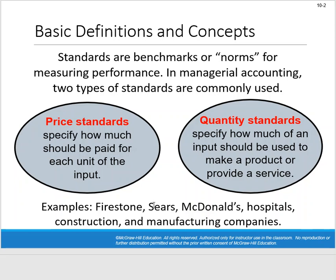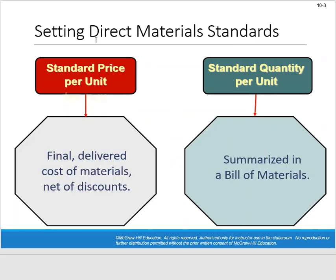Some companies use benchmarks or norms in their standard costing. The idea is that a company sets standards so they know how much their materials, labor, and overhead are going to cost. They want to have these norms and then measure whether they're meeting them. For material standards, the standard price per unit includes the final delivered cost of materials net of any discounts, and the standard quantity is summarized in a bill of materials — the quantity allowed to produce one unit of product.